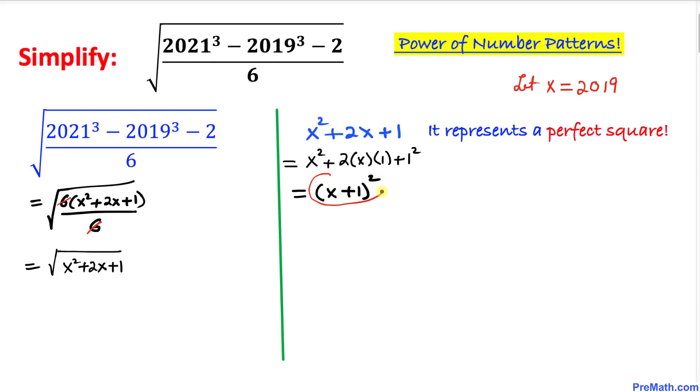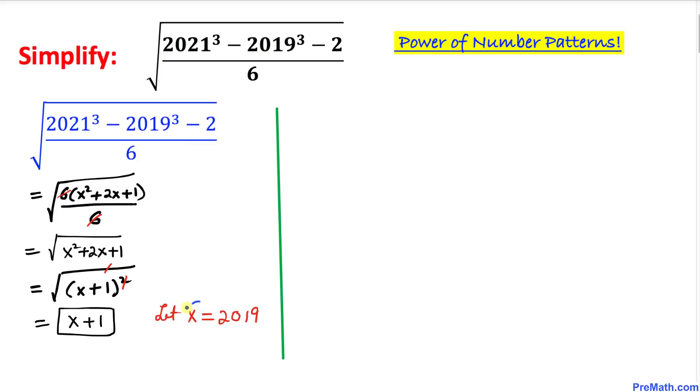Now let's go ahead and substitute this one back over here. So we simply got the square root of (x + 1)², and we can see that this square and square root undo each other, so we simply ended up with x + 1. But we know that x equals 2019, so let's go ahead and replace over here. This is going to become 2019 plus 1 equals 2020.